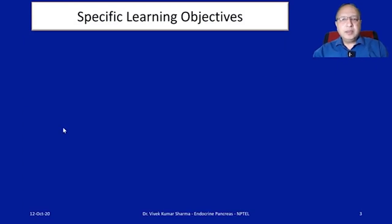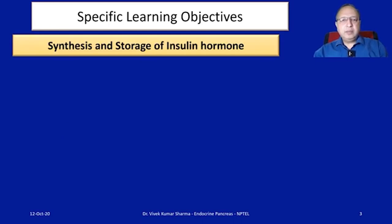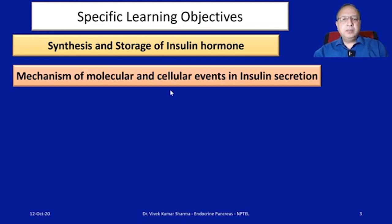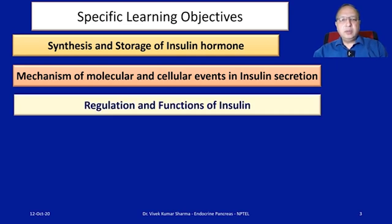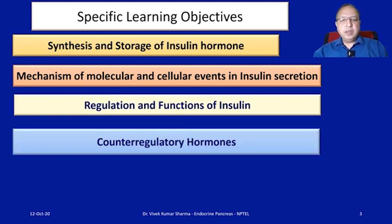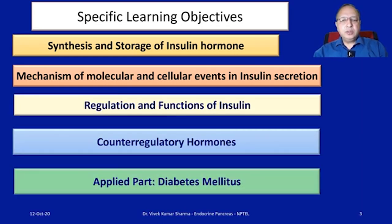The specific learning objectives of this lecture are that by the end of this chapter, we should be able to understand the synthesis and storage of insulin hormone, mechanism of molecular and cellular events in insulin secretion, regulation and functions of insulin, counter-regulatory hormones, and the applied part — that is, diabetes mellitus.